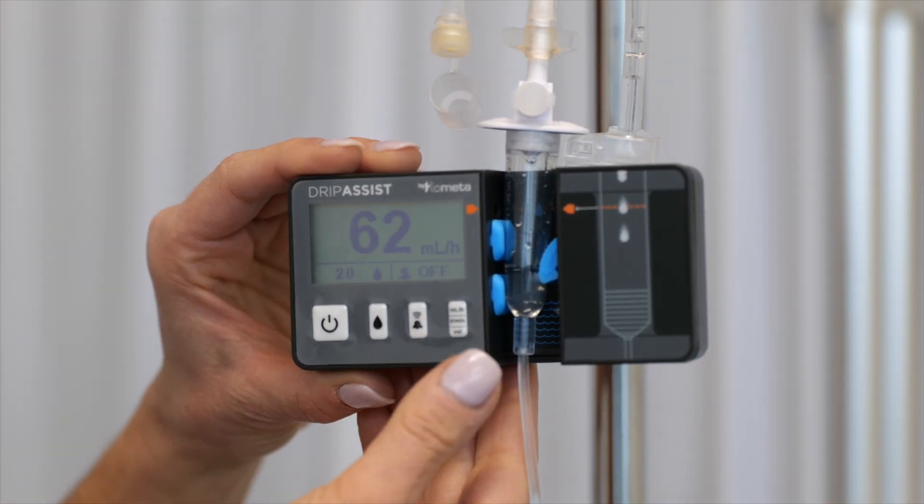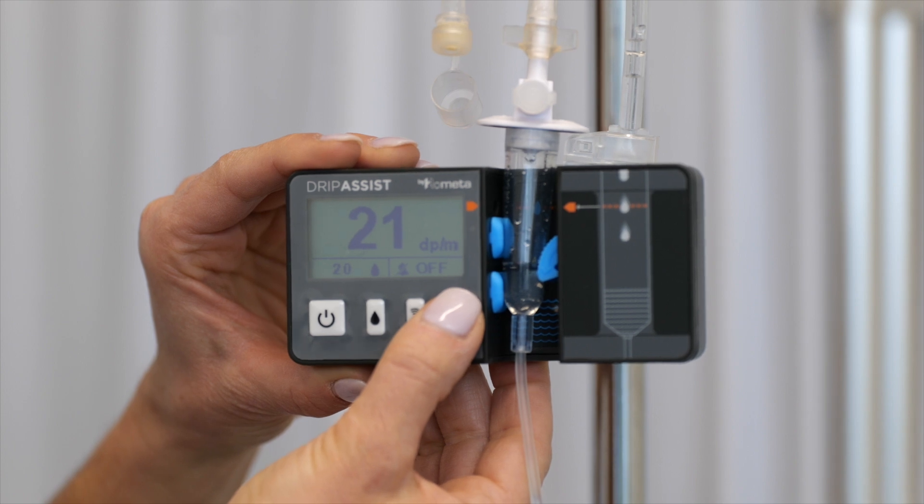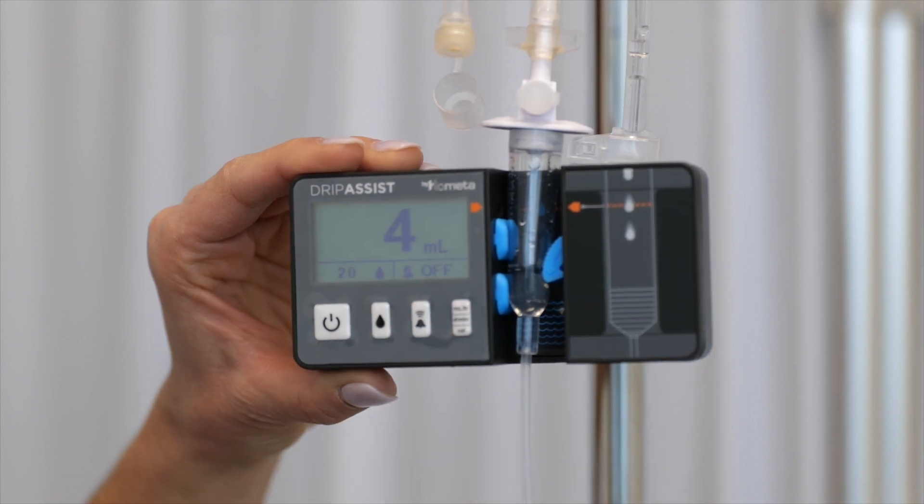You can press the display units button to toggle between milliliters per hour, drops per minute, or total volume infused.